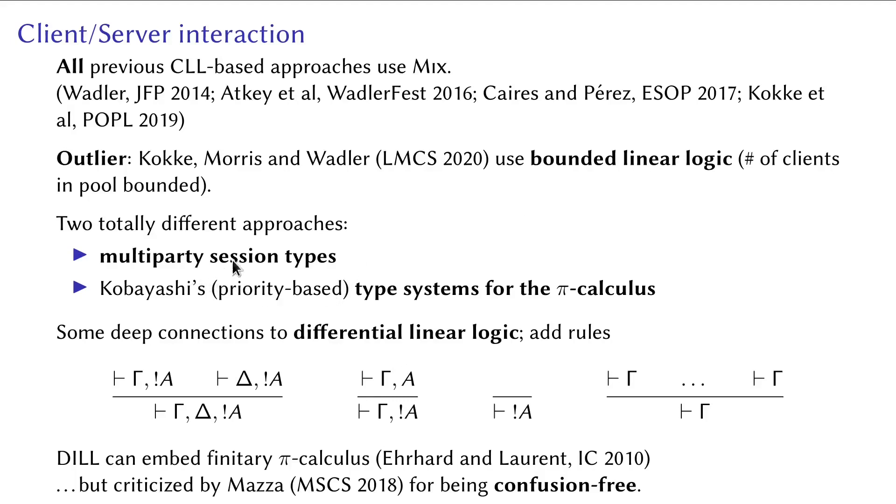There are two other approaches, namely multiparty session types, where multiple parties of each role interact with each other according to a global protocol. This is, of course, different to our system, where there are only two roles, namely server and client, and the number of clients is variable. There's also Kobayashi's work, who added type systems to pi calculus in pursuit of good properties. They, however, didn't aim for any connection to linear logic. Finally, our co-exponential rules are very similar to some of the exponential rules in differential linear logic, but we are not sure about the connection.